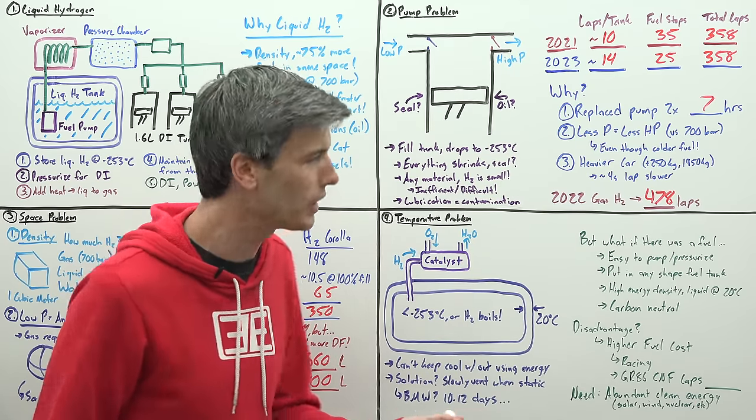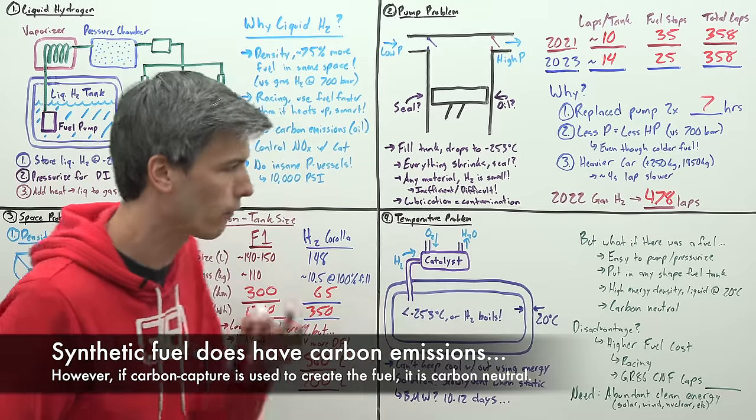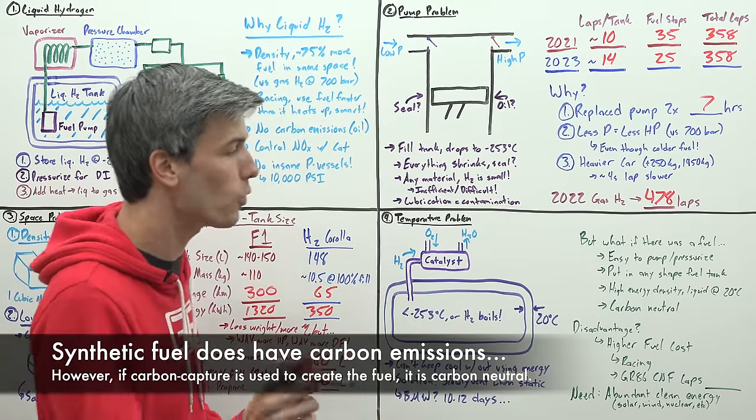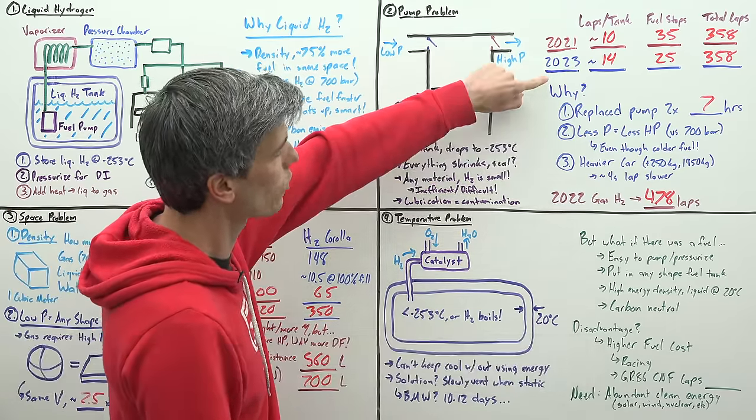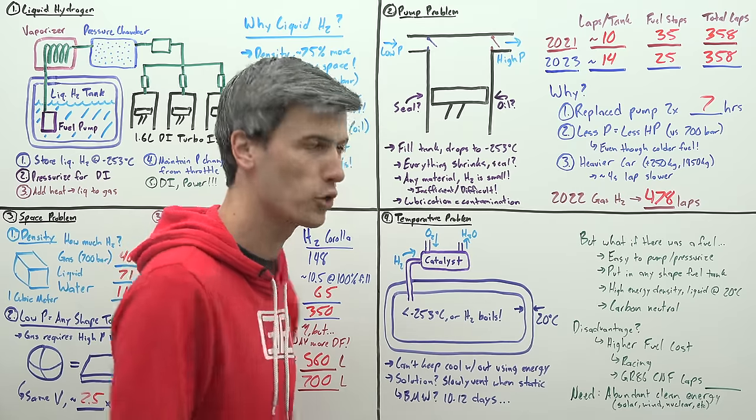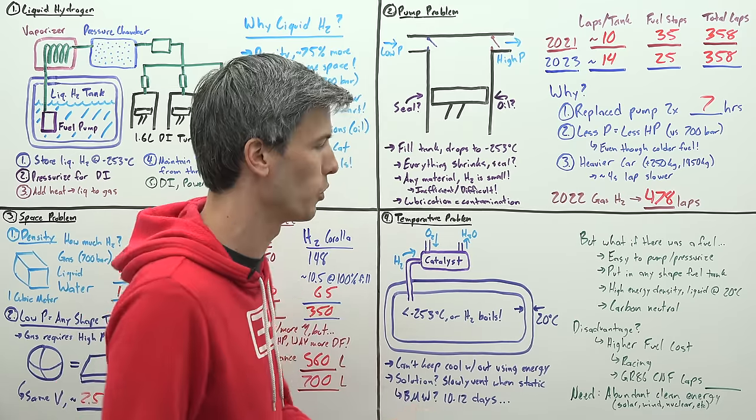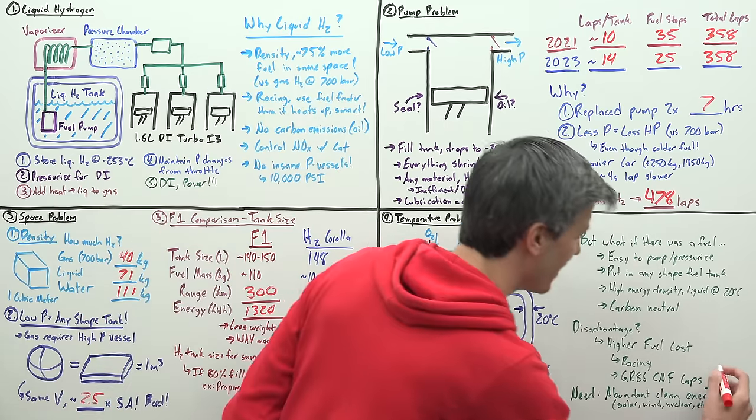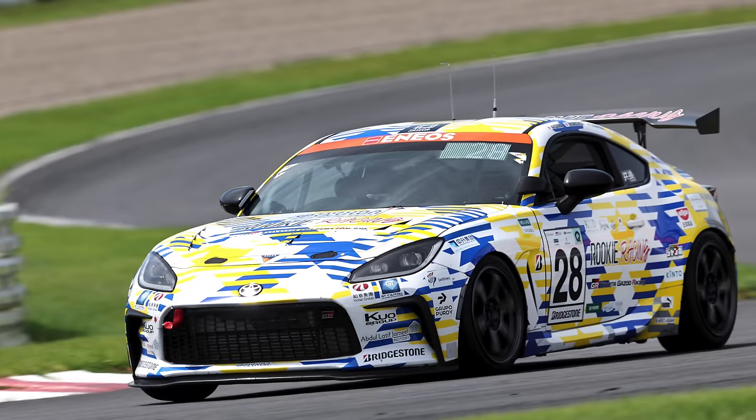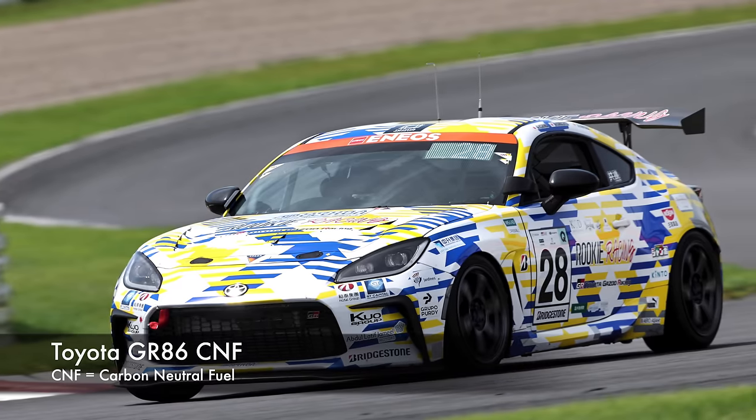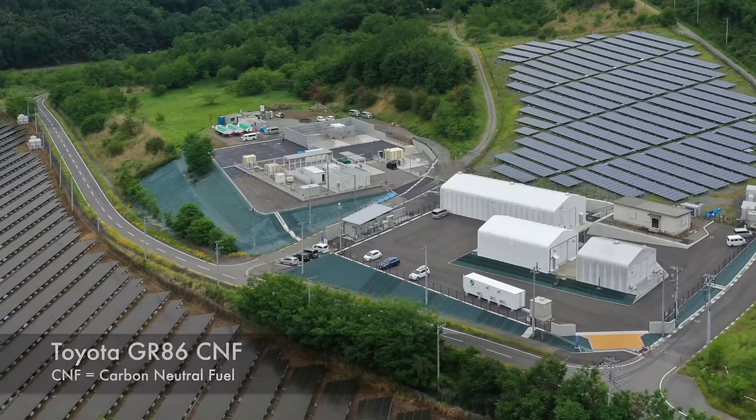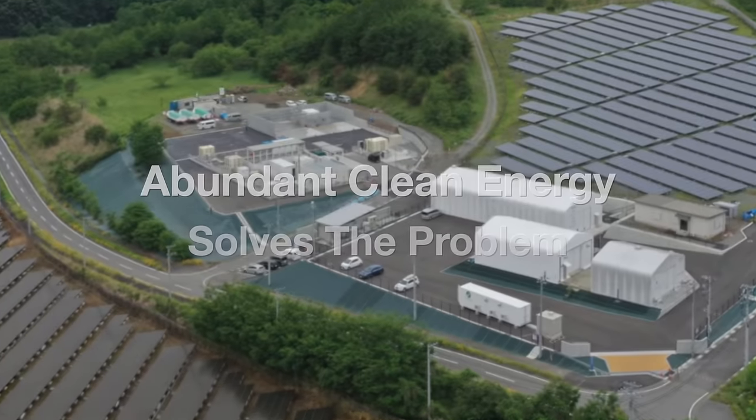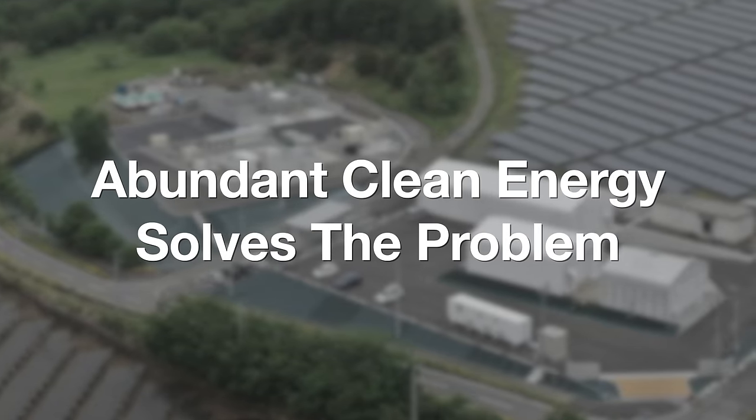Synthetic fuel solves all these problems. Its only disadvantage is that it has a higher fuel cost. So guess what did way more laps than Toyota's liquid hydrogen GR Corolla? Toyota's carbon neutral fueled GR86 did 640 laps, 282 more than the liquid hydrogen, all with vastly simpler systems. The only thing we need to make synthetic fuel work is abundant clean energy.